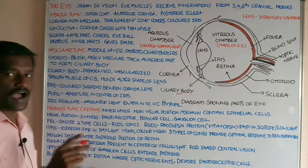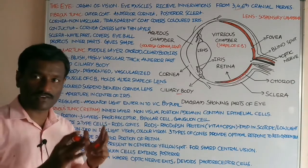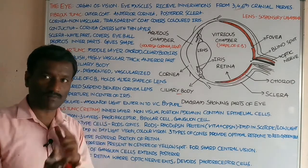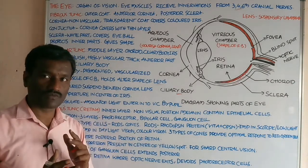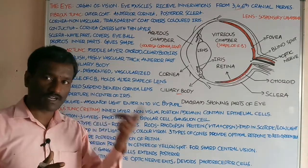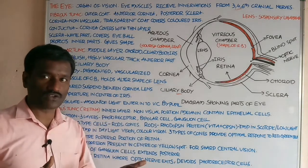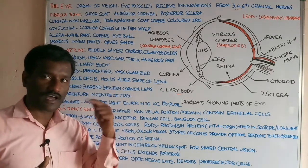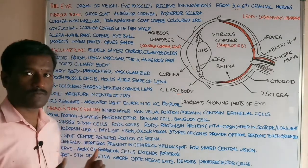The entire eyeball is divided into three parts: fibrous tunic, vascular tunic, and nervous tunic.